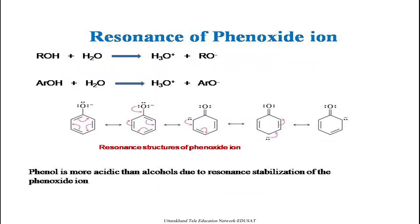Here we will discuss resonance of phenol. When alcohol reacts with water, we obtain a hydronium ion and an RO⁻ group (alkoxide). When phenol reacts with water, we obtain a hydronium ion and a phenoxide ion. Now we will look at the resonance structures of the phenoxide ion. In the phenoxide ion, oxygen has two lone pairs of electrons. When a proton leaves, a negative charge remains on the oxygen, and the lone pairs of oxygen participate in resonance with the ring.